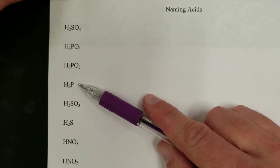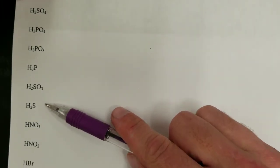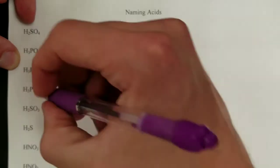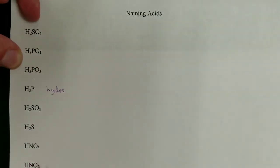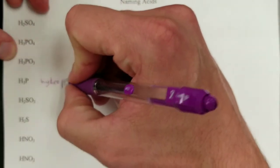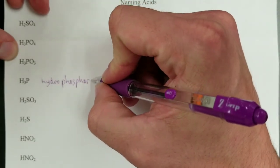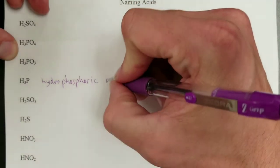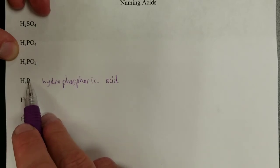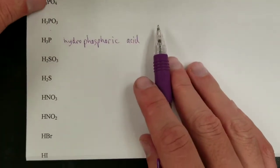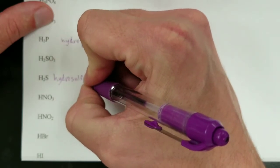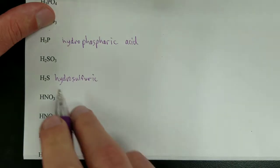Let's start with the ones that don't have oxygen in their formula. If an acid does not have oxygen, the name starts with 'hydro' — guaranteed. This one contains phosphorus, so we call it hydrophosphoric acid. Phosphorus is a 3-minus ion, so it requires three hydrogens. Sulfur is a 2-minus ion, which is why it has two hydrogens — hydrosulfuric acid.